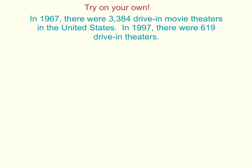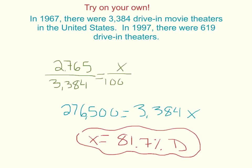In 1967, there were 3,384 drive-in movie theaters in the United States. In 1997, there were only 619 drive-in theaters. Pause the video and see if you can find the percent of change on your own. You should have gotten that drive-in movie theaters had an 81.7% decrease.